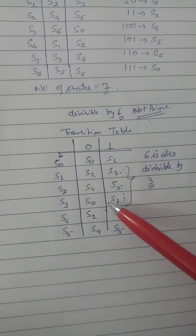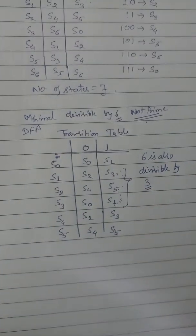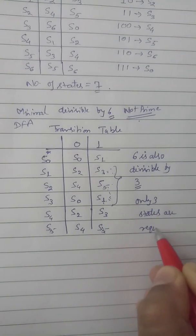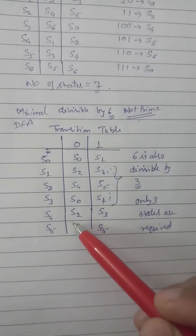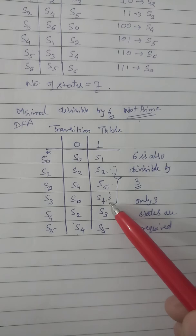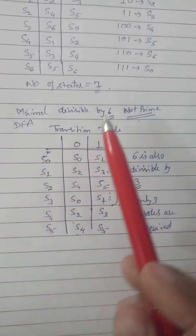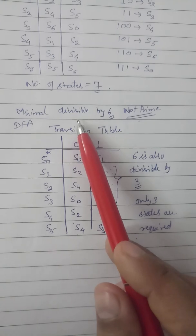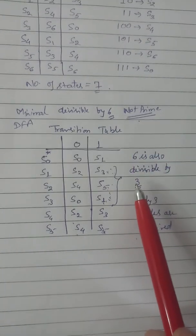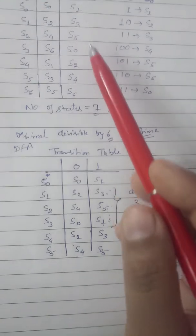We have 6 states but 3 are repeated. So if we make a minimal DFA, only 3 states are required. The non-minimal DFA has 6 states, but since 3 of them repeat, we can remove those 3 states. Only 3 states are required to make a minimal DFA that accepts all binary numbers divisible by 6. This happens when the number is not prime — since 6 is divisible by 3. But if the number is prime, then no repetition is possible, so for 7 there is no repetition and 7 states are the minimum.